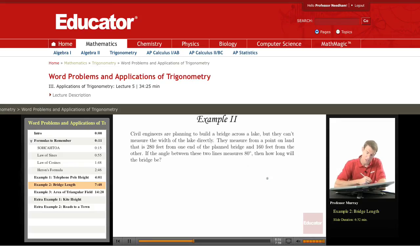And so it says that these engineers measure from a point on land that is 280 feet from one end of the bridge, 160 feet from the other, and then the angle between these two lines is 80 degrees, and from that we're supposed to figure out how long the bridge will be.